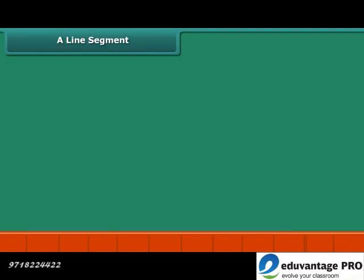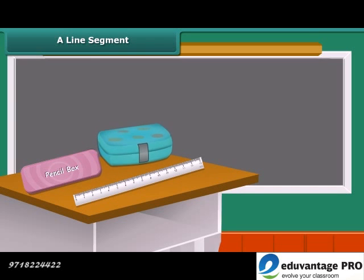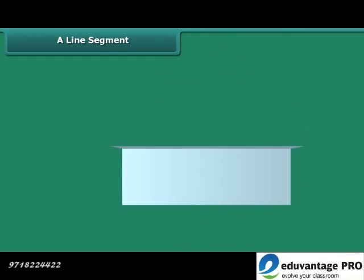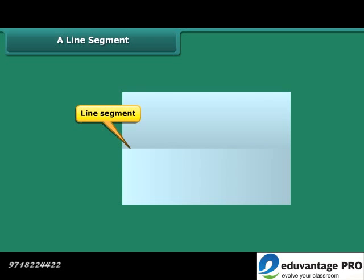There are many examples of a line segment in our daily life. The edge of a desk, blackboard, pencil box, ruler, or lunch box is a line segment. Take a paper, fold it and then unfold it.